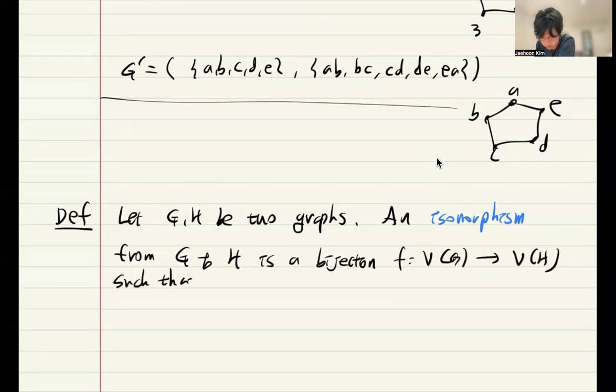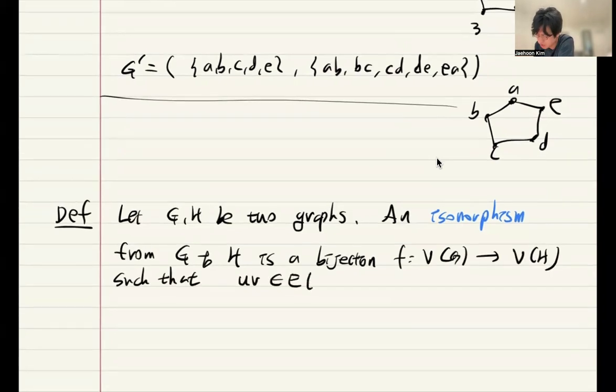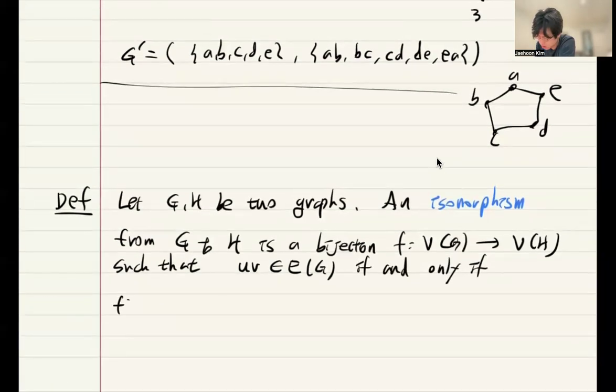It is a bijection between vertices such that it preserves the adjacent and non-adjacent. UV is an edge of G if and only if F(u) and F(v) are adjacent in H.